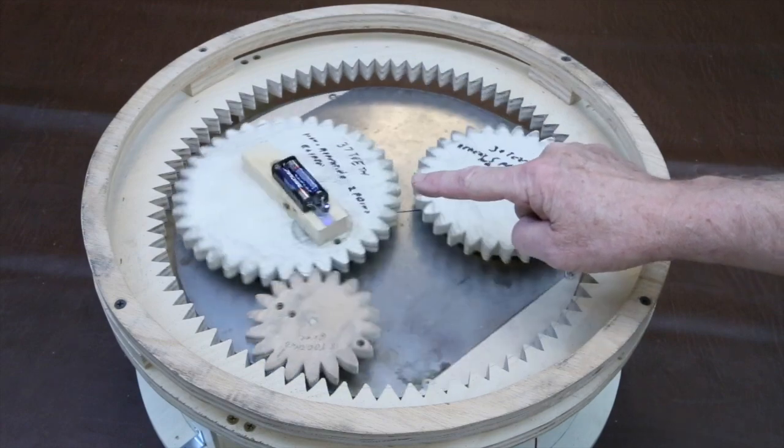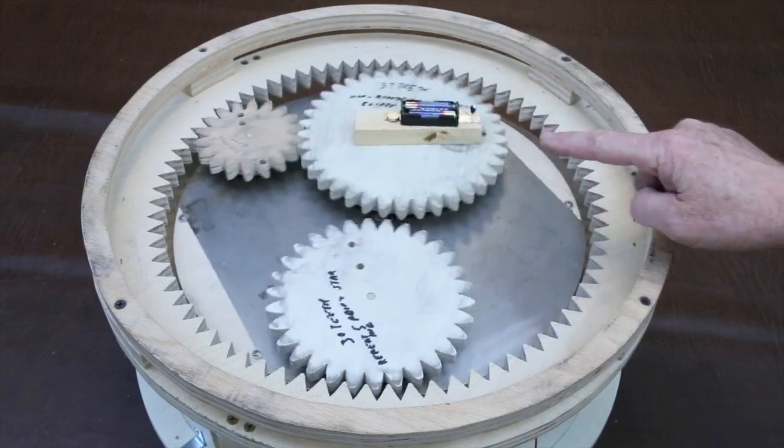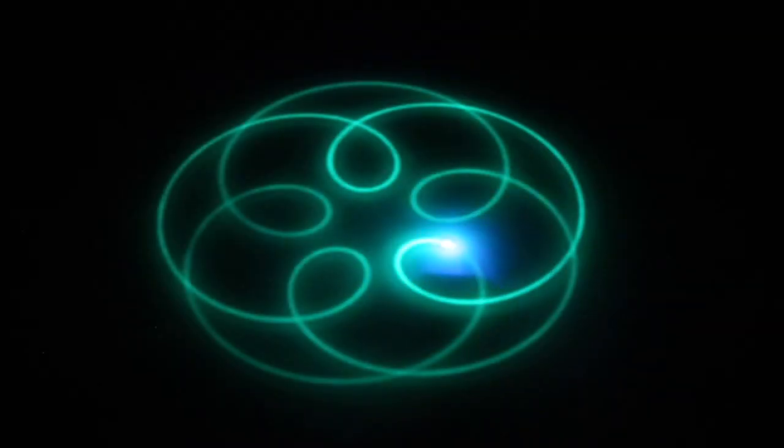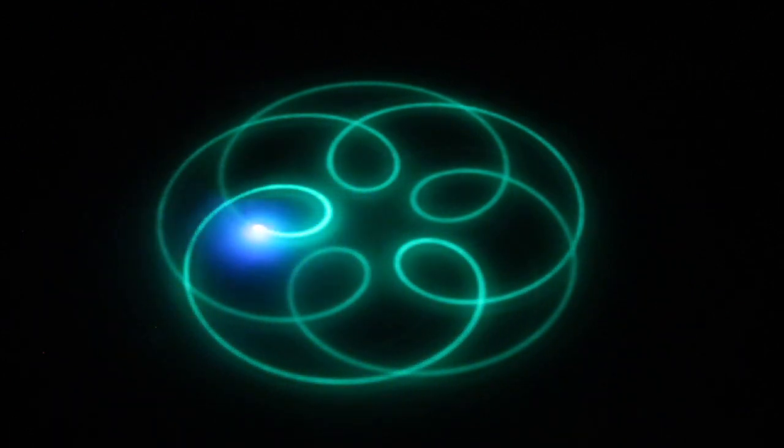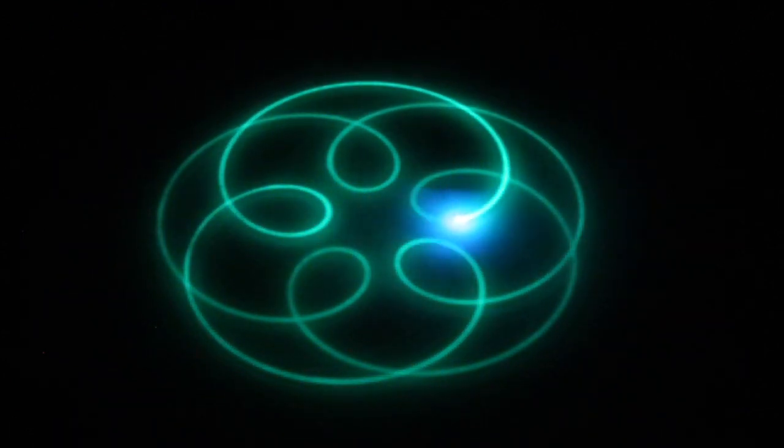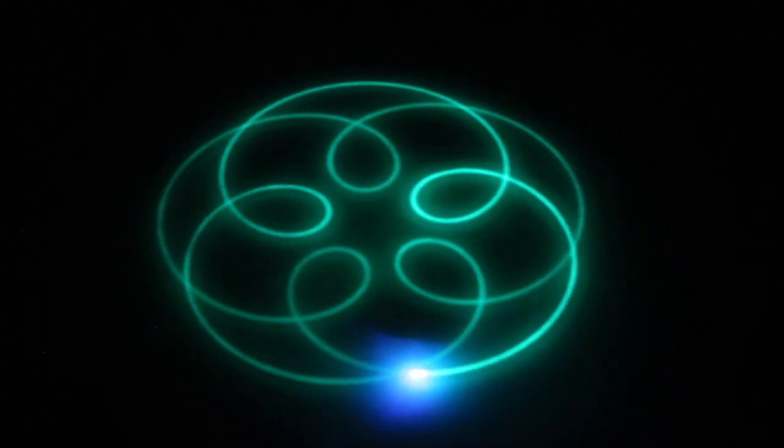by replacing the magnet with a battery-powered ultraviolet LED, and the sand tray with glass painted with glow-in-the-dark paint, it can be converted into a lumiscope that creates glowing traces like this.